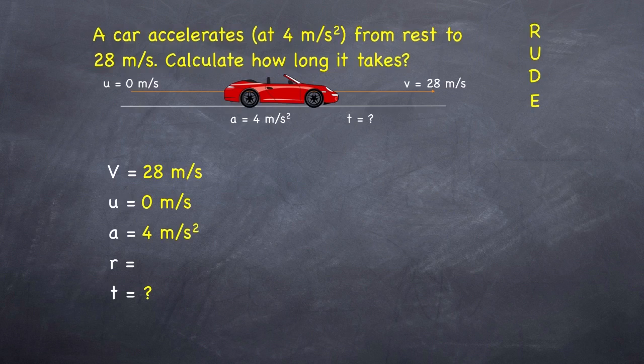So what equation has those four variables, of which, of course, only one is unknown? In fact, all your equations of motion usually have four variables—any combination of these five given here—where one of them is unknown. Well, in this case, it's v equals u plus at.